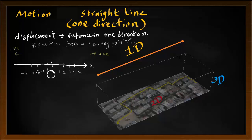Suppose we are at a point A. If the question is: what is the displacement OA? First, it's towards the right, so it will have a positive value. Next, what is the position from O? Counting 1, 2, 3, 4, 5 — suppose it's 5 meters. So X equals positive 5 meters.